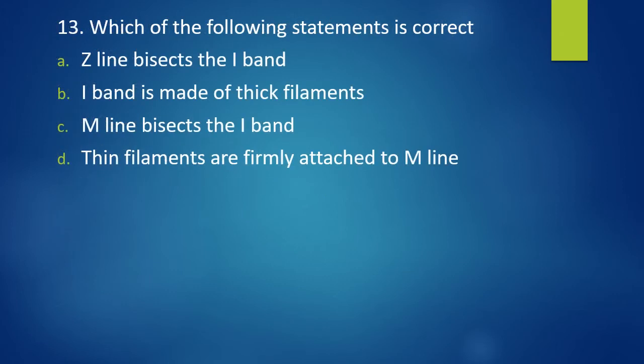Question 13. Which of the following statements is correct? Z-line bisects the I-band, I-band is made of thick filaments, M-line bisects the I-band or thin filaments are firmly attached to M-line. You have to mark the correct statement. Correct answer is option A. Z-line bisects the I-band.